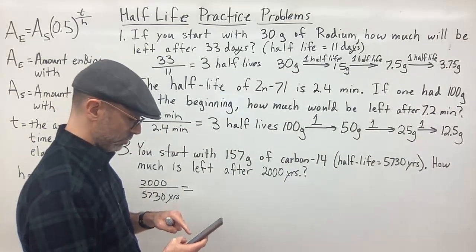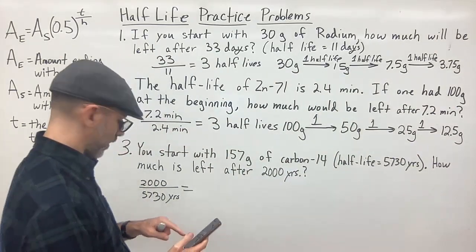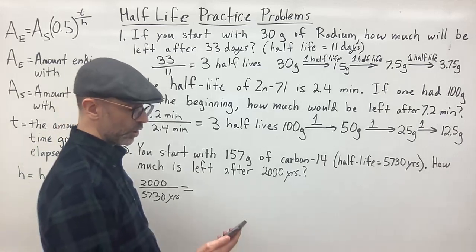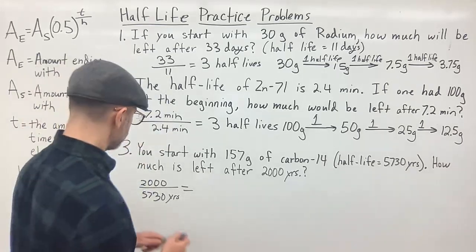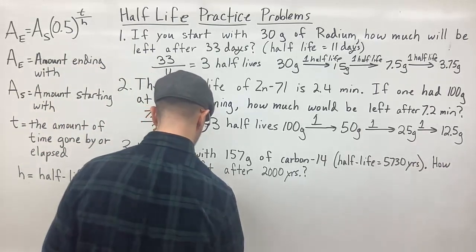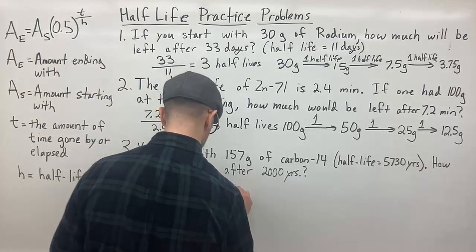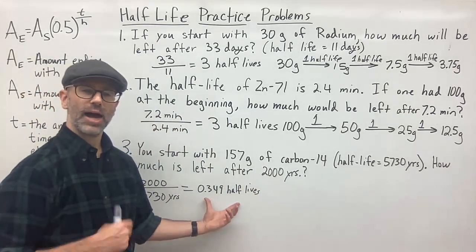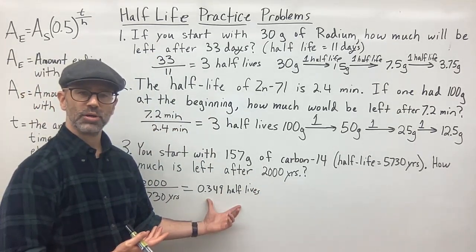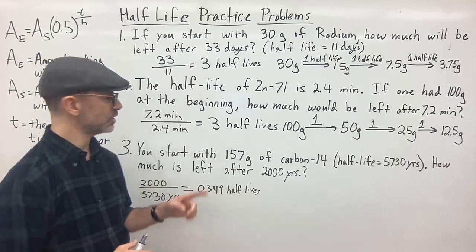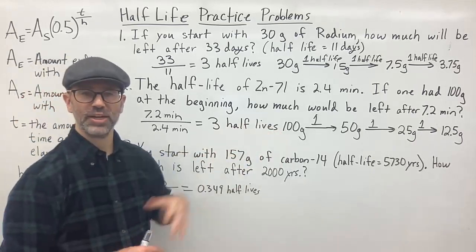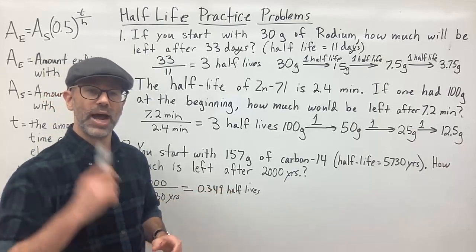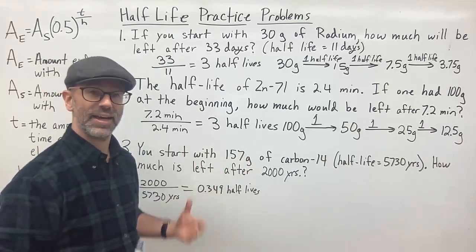Let's calculate: 2,000 divided by 5,730 equals 0.349. So I have 0.349 half-lives — not even one half-life. I can't simply divide by half once since I don't even have a full half-life. The straightforward halving method won't work here, but we have an equation that applies to any problem.